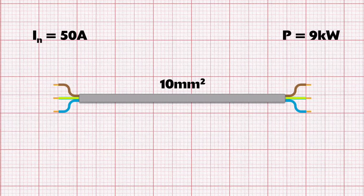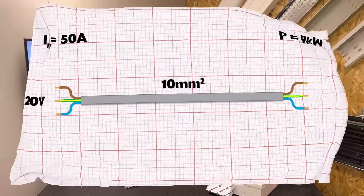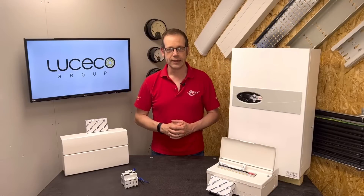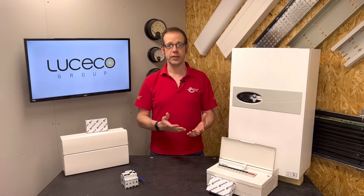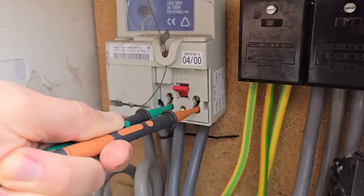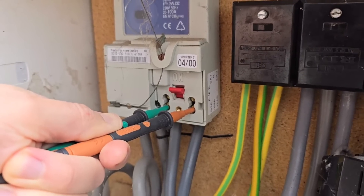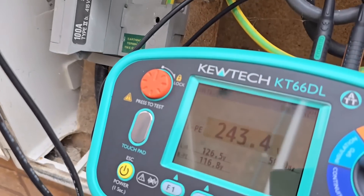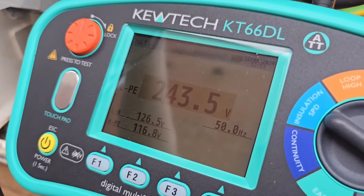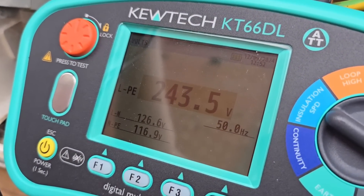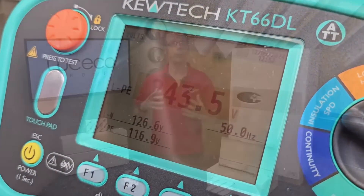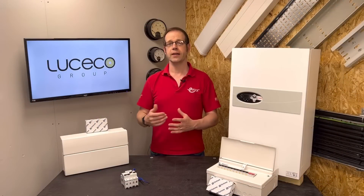Ask any electrician, apprentice, or someone vaguely connected to the electrical industry, and they'll tell you that the single phase voltage is 230 volts in the UK. This is correct in that it's the nominal voltage — the value that we aim to have delivered to properties — but in reality, it can be higher or lower when it arrives at our installation from the DNO, and it will also vary within the property depending on a number of factors.